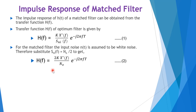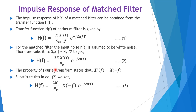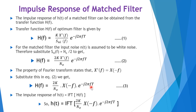The property of the Fourier transform states that the complex conjugate of X(f) is nothing but X(−f). We can substitute this in the numerator of H(f), giving us the equation 2k divided by N0, times X(−f), times e raised to minus j2πft.